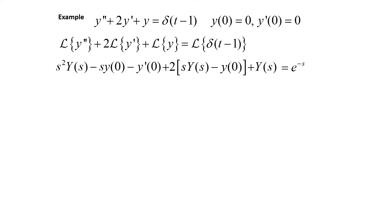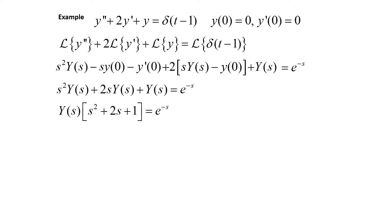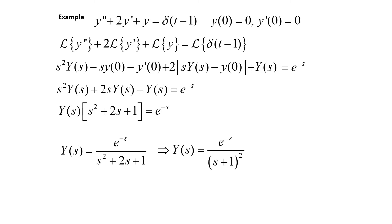We know that y(0) equals 0 and y'(0) equals 0, so all of those extra terms on the left-hand side go away, giving us s squared·Y(s) plus 2s·Y(s) plus Y(s) equals e to the negative s. We factor out Y(s): Y(s) times (s squared plus 2s plus 1) equals e to the negative s. Then we divide by the quadratic, so Y(s) equals e to the negative s over (s squared plus 2s plus 1). We can factor our denominator, so Y(s) equals e to the negative s over (s plus 1) squared.